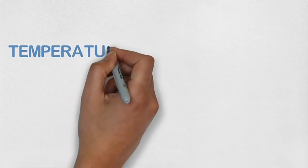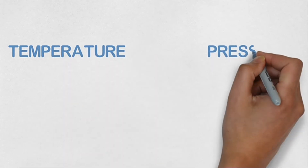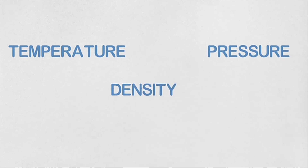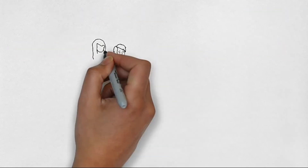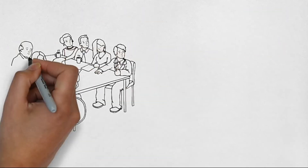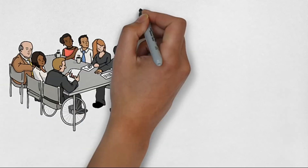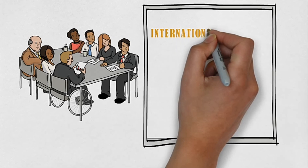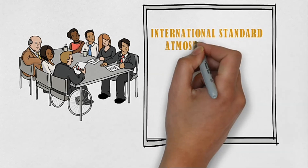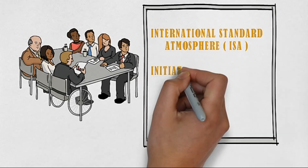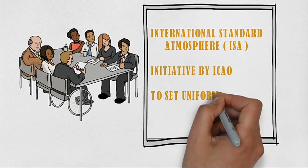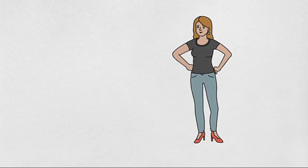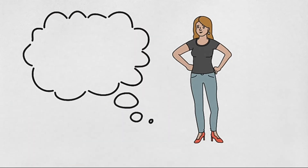There are different temperature, pressure, and density values at mean sea level and at different locations. The International Standard Atmosphere (ISA) committee, an initiative by ICAO, was formed to set a uniform standard throughout the world. This gives us a clear and consistent reference for atmospheric conditions.